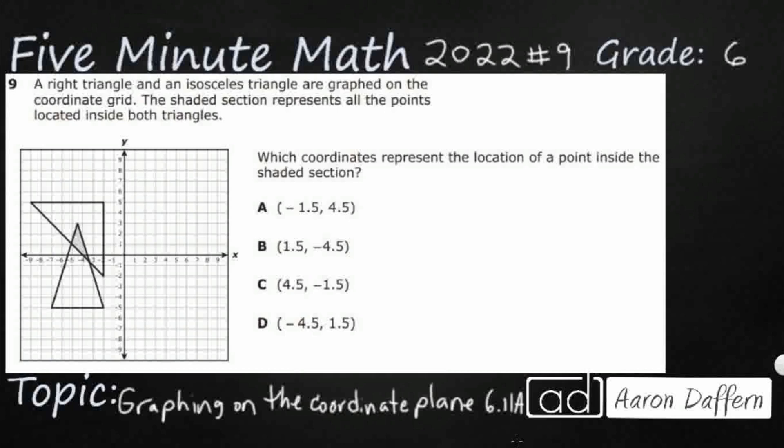So we have a right triangle, we have an isosceles triangle, they're graphed on the coordinate grid, and there's a shaded section that represents all the points located inside both triangles. You see there's a little bit of an overlap, and it's kind of hard to see, but our shaded section is right there.